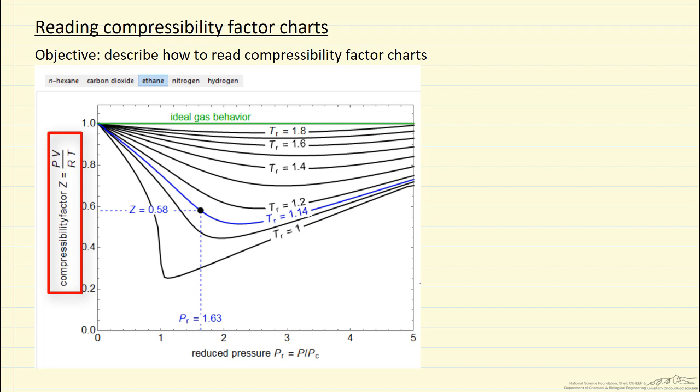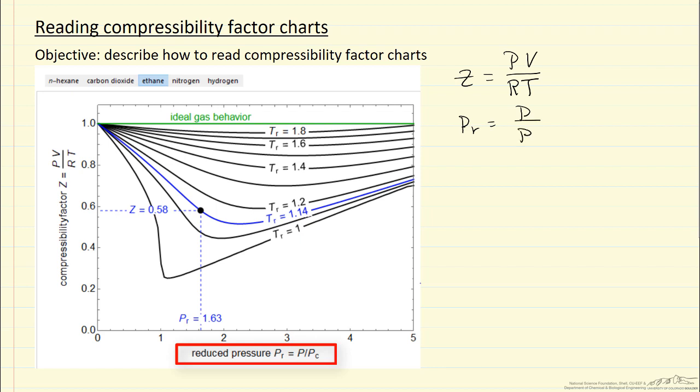Z is pressure times specific volume per mole over gas constant absolute temperature. We're plotting it versus reduced pressure, which means pressure over the critical pressure.